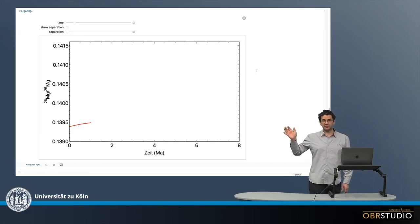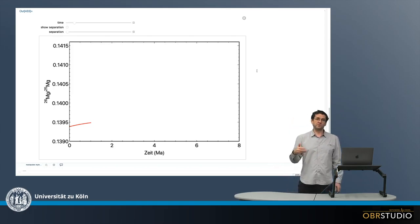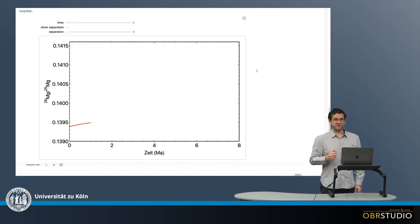So in this case, this is the decay system: 26 aluminum decays to magnesium 26 within about a little more than 700,000 years.